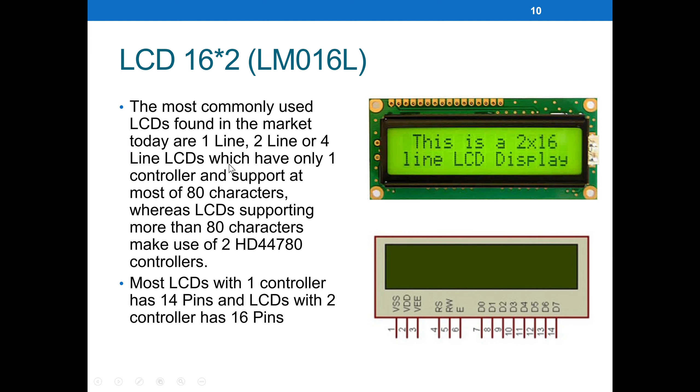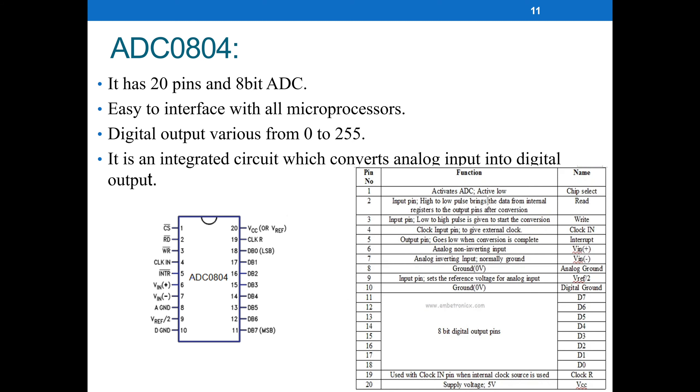Now let's see the LCD, which is 16x2. It consists of one microcontroller with 14 pins. The ADC is analog to digital converter which converts the analog signal from the temperature sensor. ADC0804 has 20 pins and 8-bit ADC. It's easy to interface with all microprocessors. Pin number 10 we ground, and pin number 20 we give VCC. The digital output varies from 0 to 255.